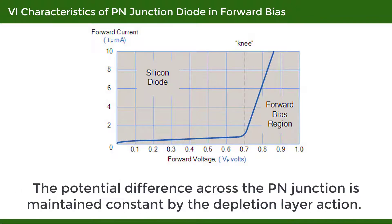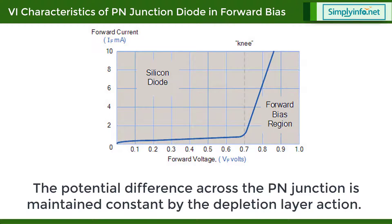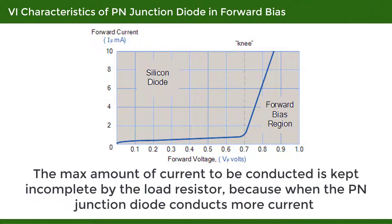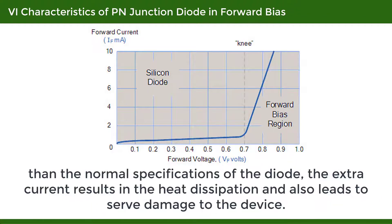The potential difference across the PN Junction is maintained constant by the depletion layer action. The maximum amount of current to be conducted is kept in check by the load resistor, because when the PN Junction Diode conducts more current than the normal specifications, the extra current results in heat dissipation and can lead to severe damage to the device.